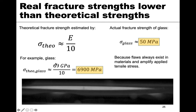For an example, let's look at glass. Glass has an elastic modulus of about 69 gigapascals, so if we divide that by 10 and convert units, we get a theoretical fracture strength of 6900 megapascals. This is a really large number; however, the actual fracture strength of glass is more on the order of 50 megapascals — a huge discrepancy.